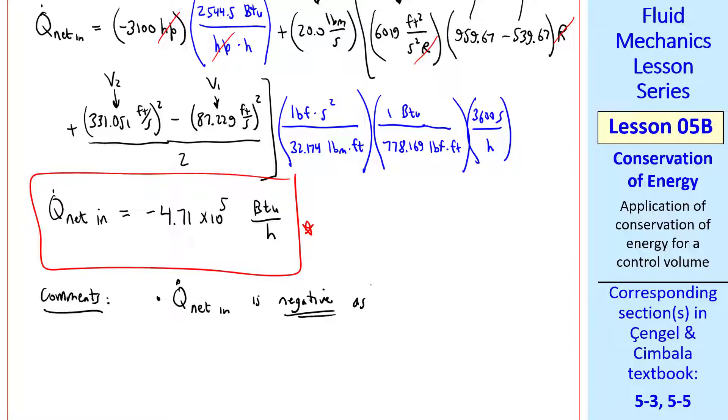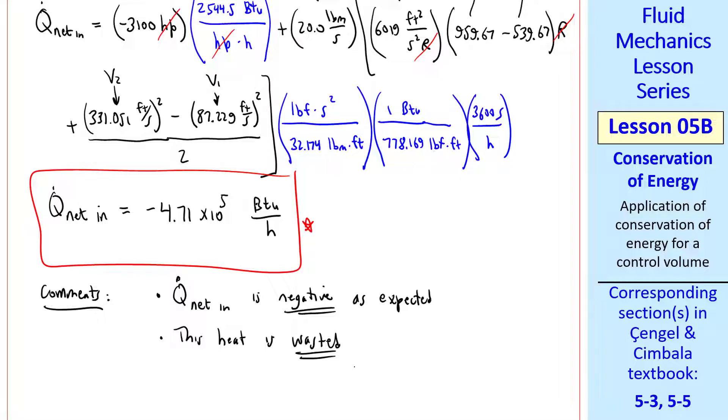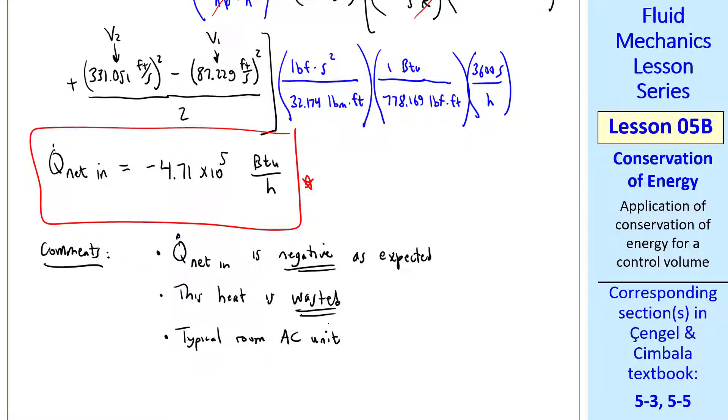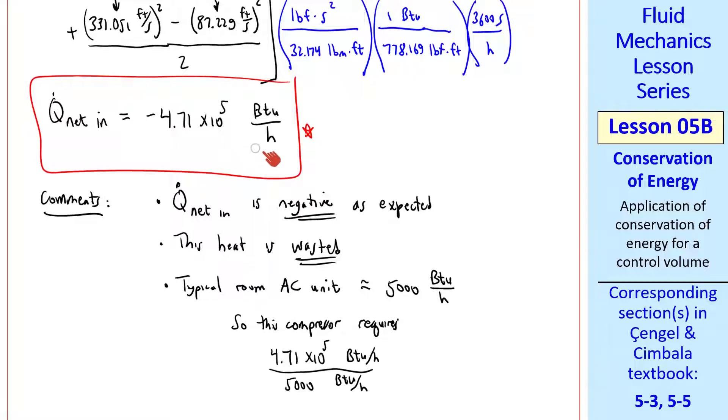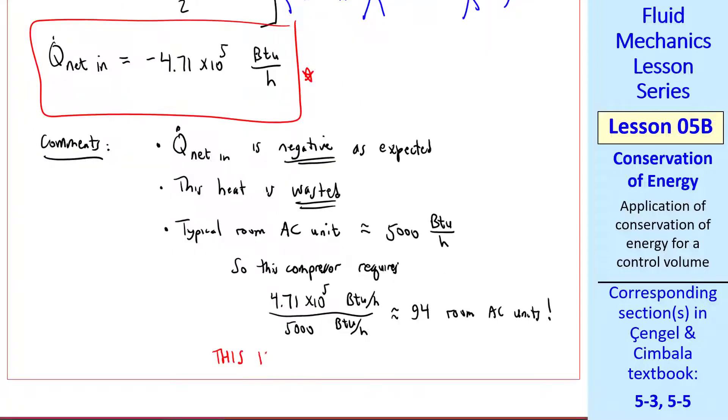A couple comments. Q̇_net_in is negative as expected since this compressor will give off heat. If you've ever been around a large compressor, you know that it puts out a lot of heat. This heat is wasted. We're adding all this shaft horsepower, but some portion of it is wasted. In later lessons, we'll define an efficiency of a compressor or a turbine to take into account this wasted heat. A typical window air conditioning unit cools at a rate of about 5000 BTU per hour. So this compressor's wasted heat, which is added into the room, divided by the cooling power of one air conditioner, comes out to approximately 94 room air conditioning units. So the bottom line is that this is a big compressor.